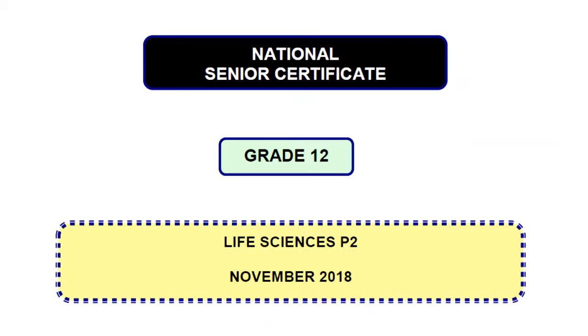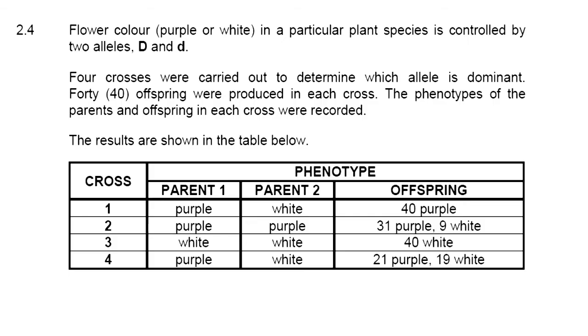So our next question comes from the November 2018 paper. This question comes out of 2.4. Flower color, purple or white in a particular plant species is controlled by two alleles, a capital D and a small d. Four crosses were carried out to determine which allele is dominant. 40 offspring were produced in each cross. And the phenotypes of the parents and the offspring in each cross were recorded. The results are shown in the table below.